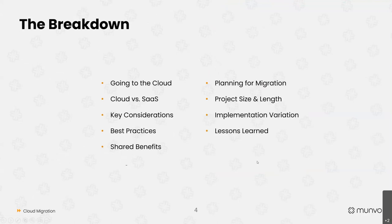Today I want to discuss: what does it mean to go to the cloud, and what's the difference between cloud and SaaS? What are key considerations when moving a marketing automation suite to the cloud? I have about ten best practices to share, along with shared benefits. When planning for migration, what do you need to consider in terms of project size, length, and implementation variation? And finally, I have three core lessons learned from moving to the cloud, regardless of your current maturity level.